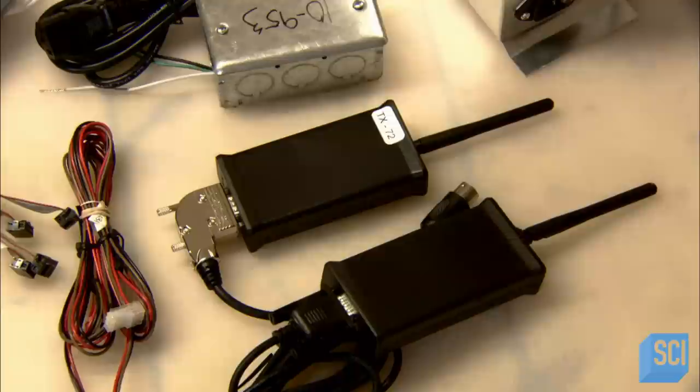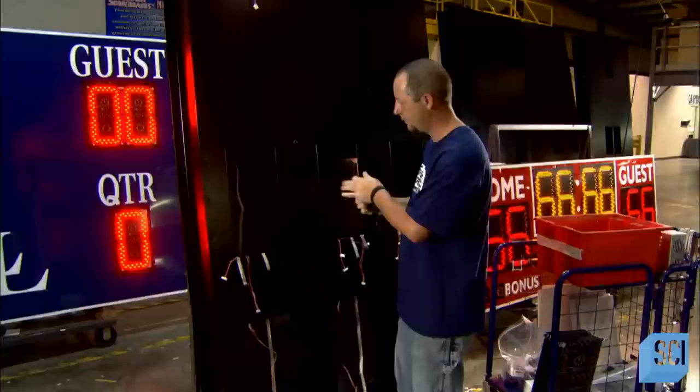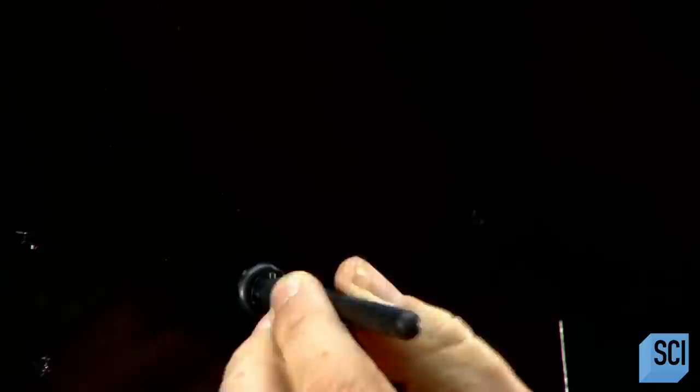They're now ready for working parts like LED light-studded digit boards, a data transmitter, and receiver. He connects the receiver to the power source and installs it inside the cabinet. He pulls the antenna through a hole so it protrudes from the front, and he bends it out of the way for now.